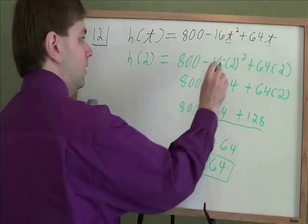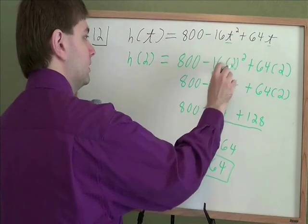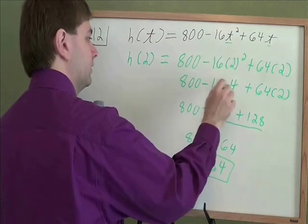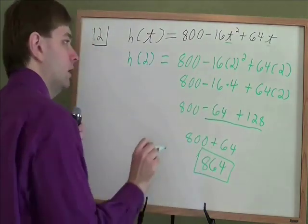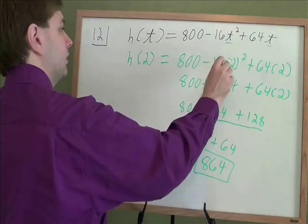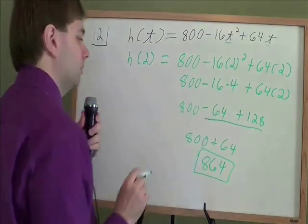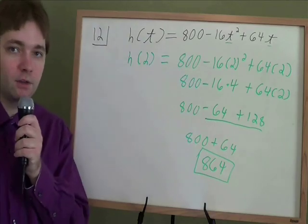And remember, if you've got something times something squared, you do the exponent first and then the multiplying. You don't do 16 times 2 and then square it. You do 2 squared and then multiply. And that's how to figure out that problem there.